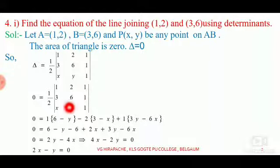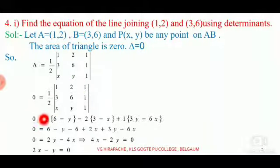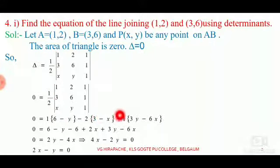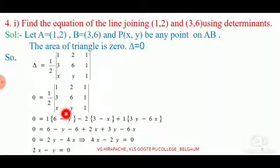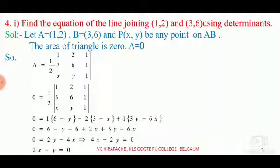Since delta is 0, we have 1/2 times the determinant equals 0. Expanding along the first row: 1 times (6 minus y) minus 2 times (3 minus x) plus 1 times (3y minus 6x) equals 0. Simplifying, we get 0 equals 2y minus 4x, which implies 4x minus 2y equals 0. Taking 2 as a common factor: 2x minus y equals 0, which is the required equation of the line.